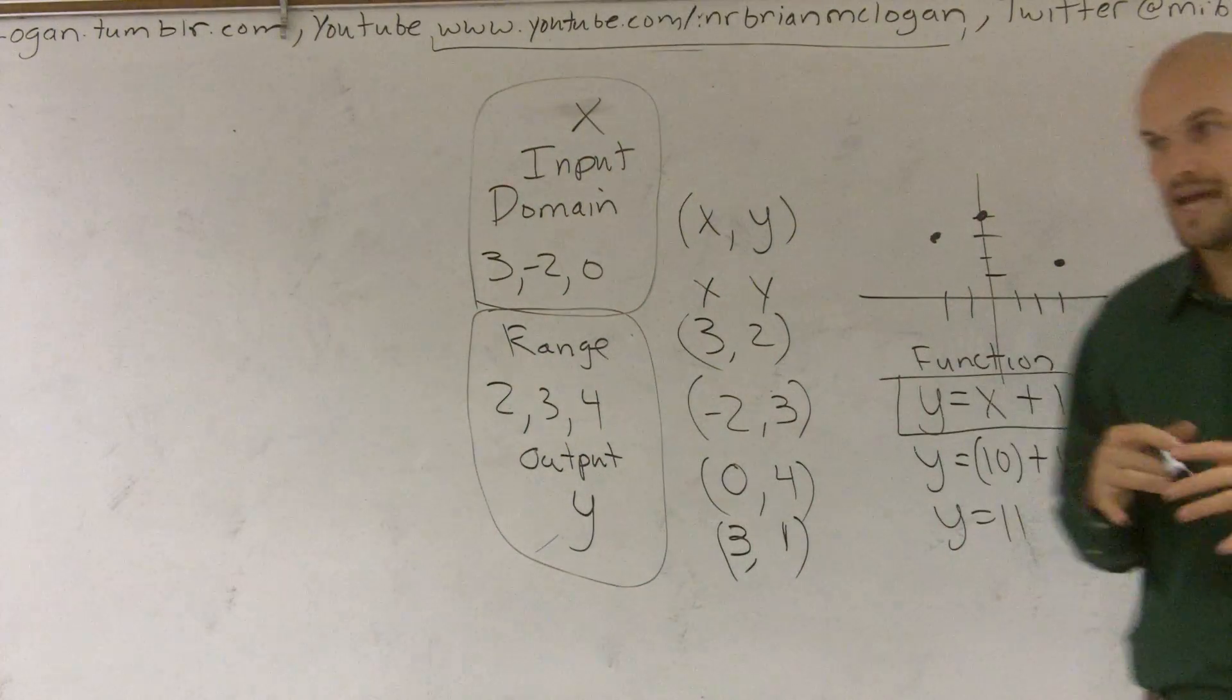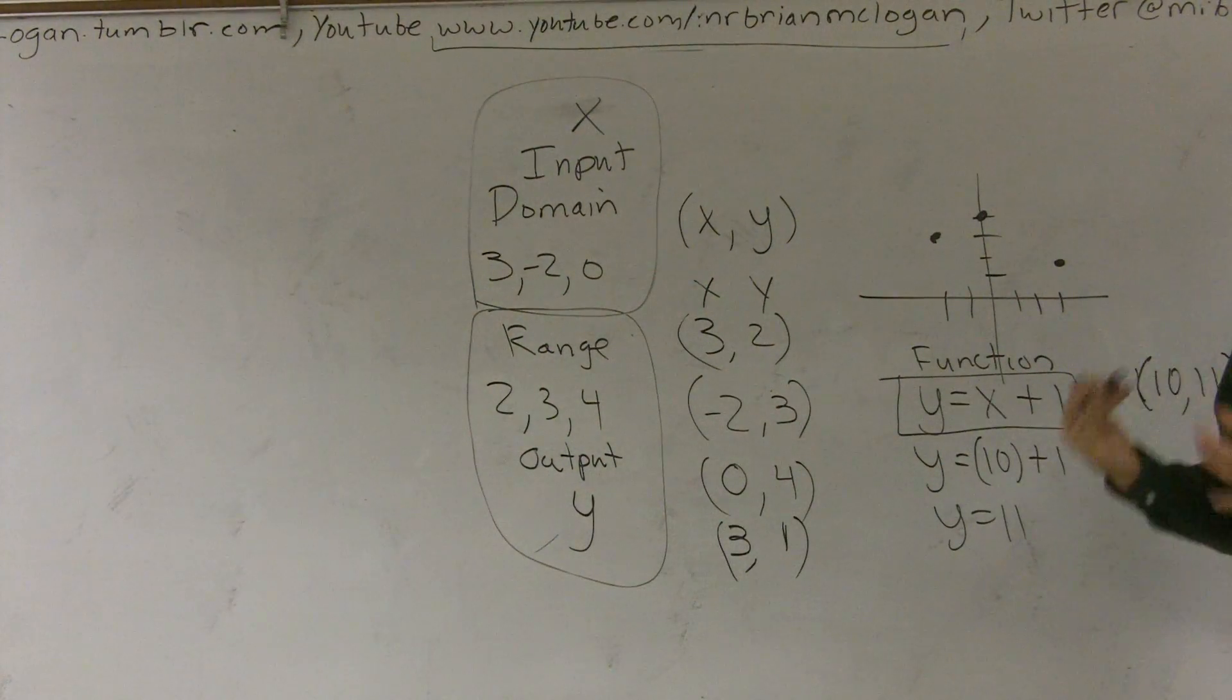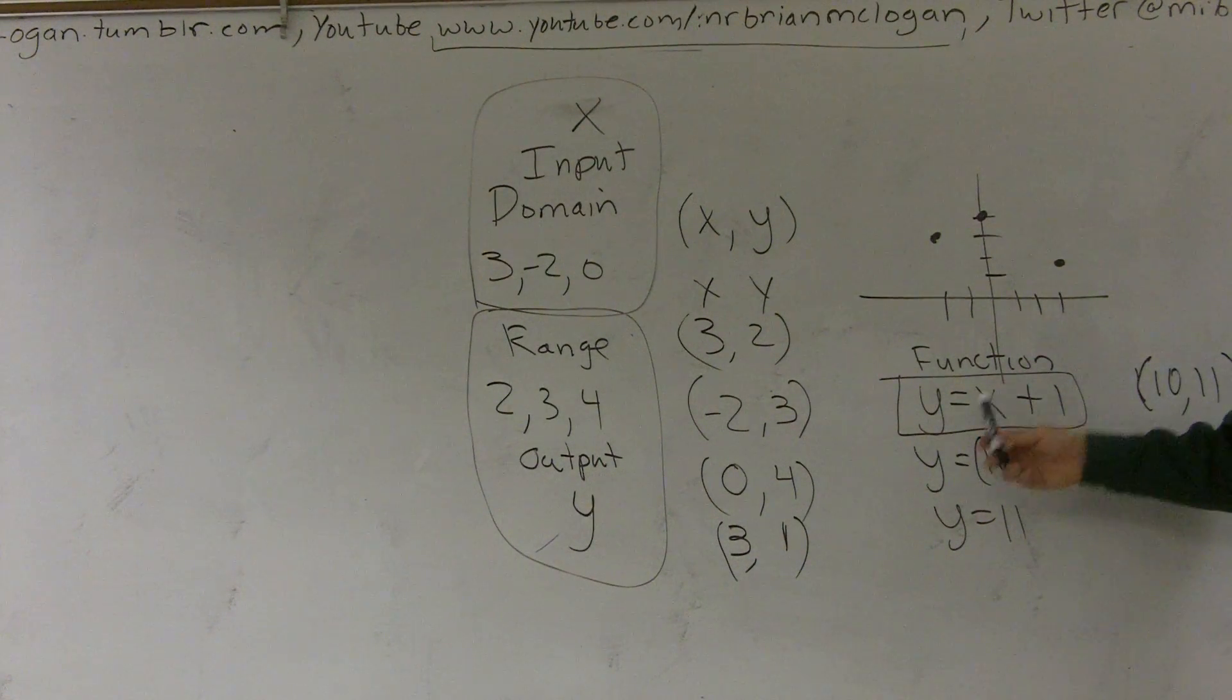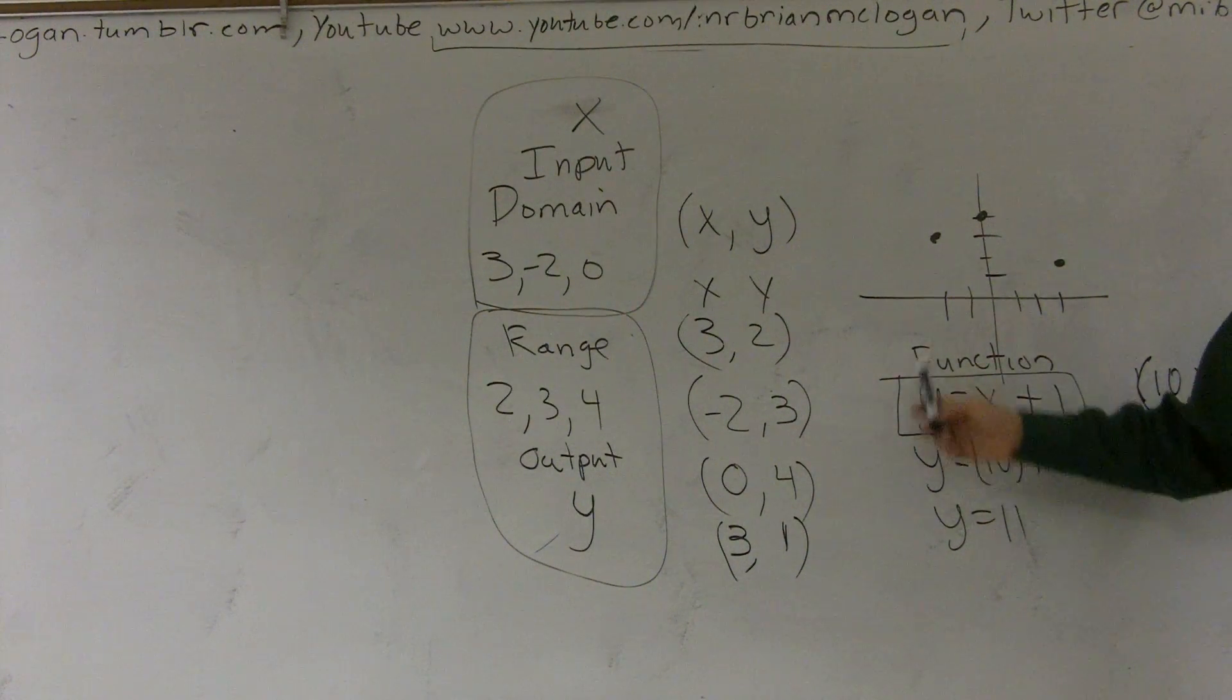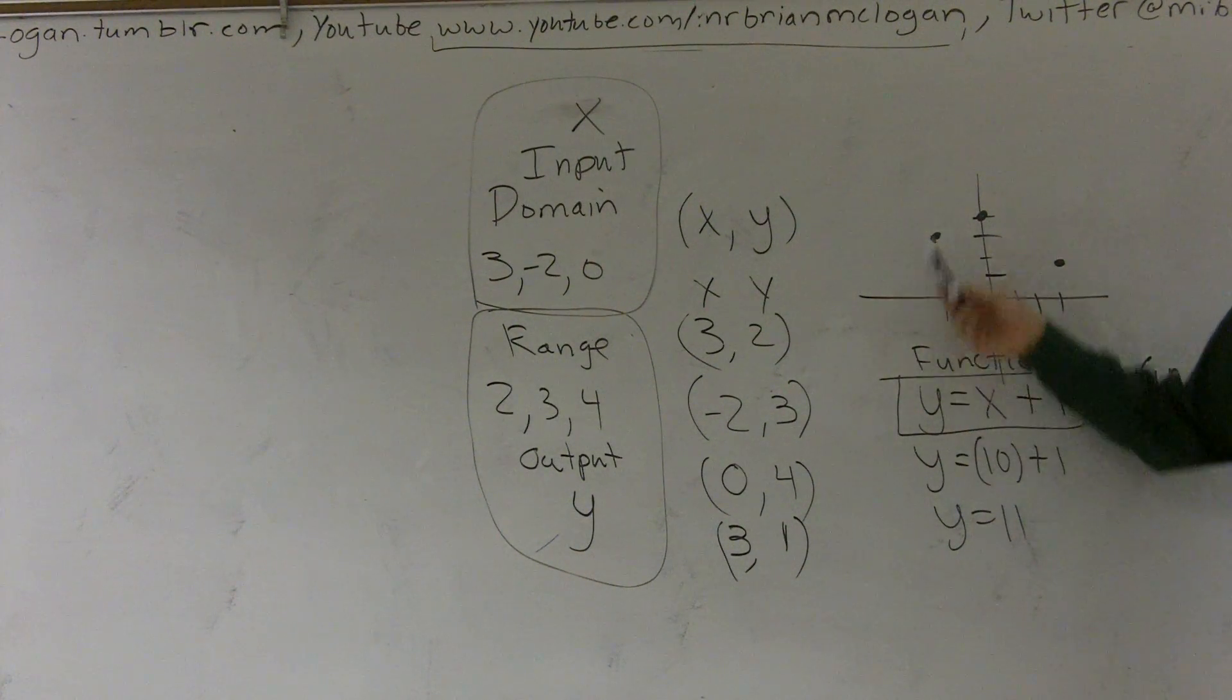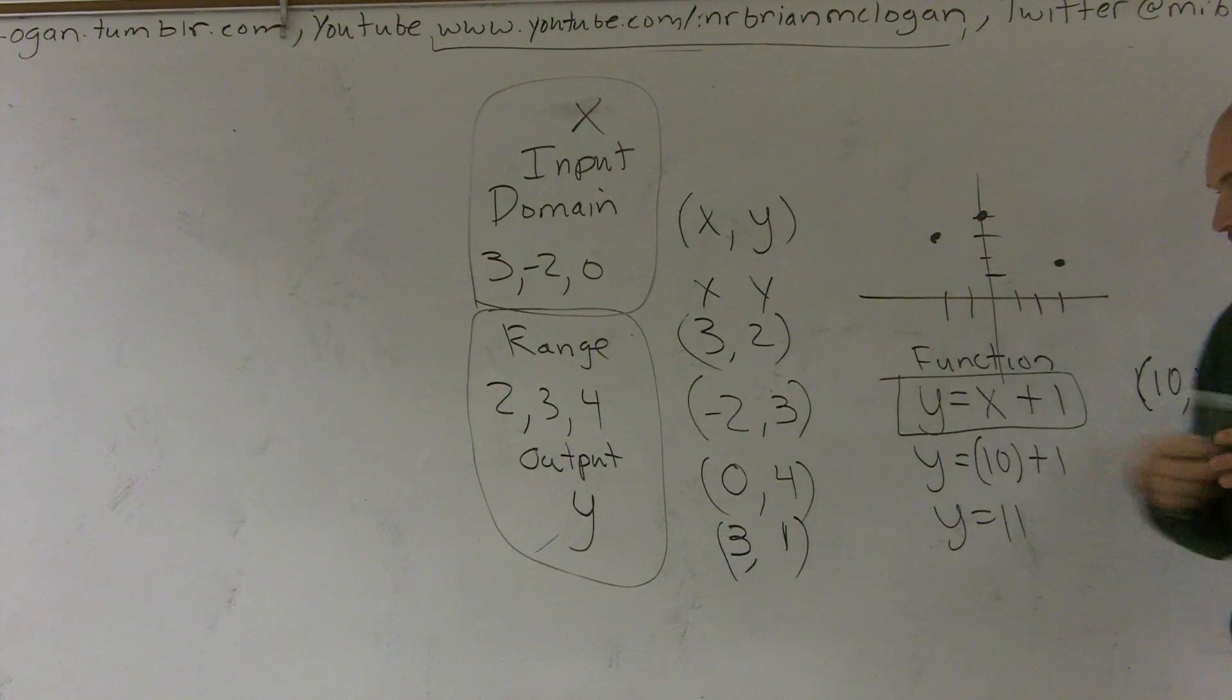So we're going to look at a couple different examples, but I want to make sure you guys understand what a function relationship is. You have something that whatever you plug in for x, you're always going to uniquely get the same output value.